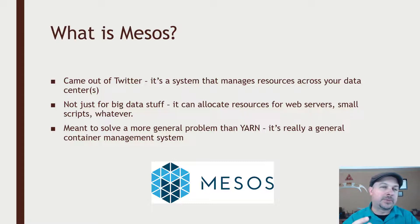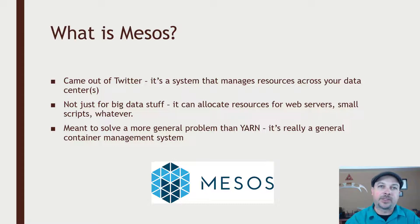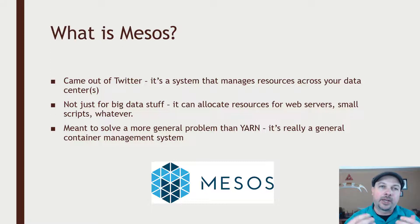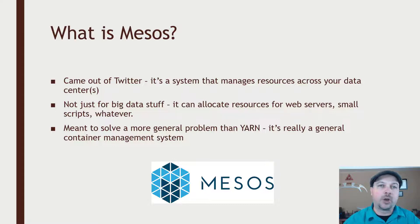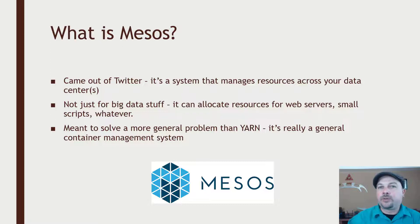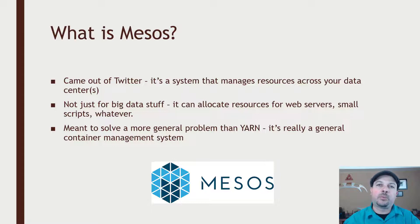Very similar in spirit to what Yarn does, but the big difference is that Yarn is restricted to Hadoop tasks — things like MapReduce or Spark, things coded against Yarn that need data locality to the underlying HDFS file system. Whereas Mesos is much more general in scope, made for any kind of application that needs to be distributed throughout a pool of computing resources — that could be long-lived resources like web servers or small tasks that just need to run for a few seconds.